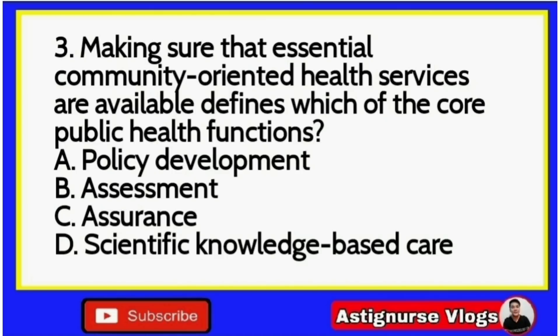Common board question number three: 'Making sure that essential community-oriented health services are available defines which of the core public health functions?' A. Policy development, B. Assessment, C. Assurance, or D. Scientific knowledge-based care. Letter D is eliminated. The keyword is 'making sure that essential health services are available,' which means ensuring availability — that is assurance. The correct answer is letter C — Assurance, because it ensures the availability of health services.